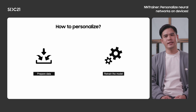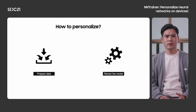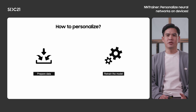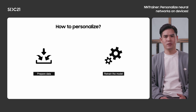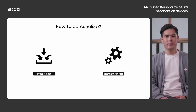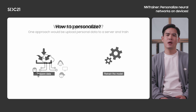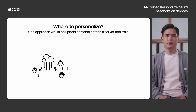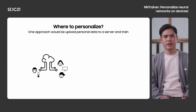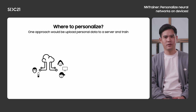This personalization can be done by deploying a model, preparing data for training, and retraining the model per person per device — which means it will need lots of computing power and resources. One approach would be to personalize the model on a server by uploading gathered user data and conducting training right on the server.